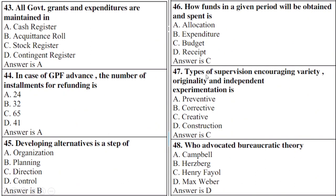Types of supervision: encouraging variety, originality, and independent experimentation is — right option is C: creative supervision. Question 48: Who advocated bureaucratic theory — right option is D: Max Weber.